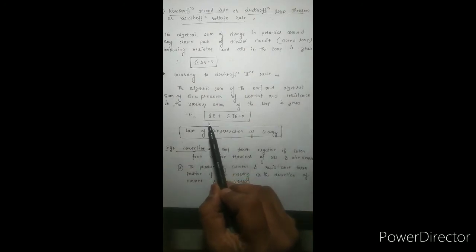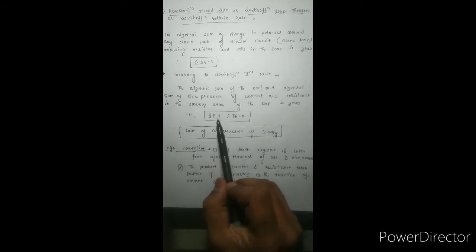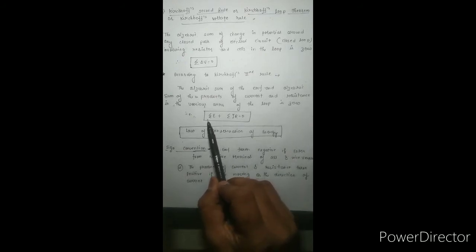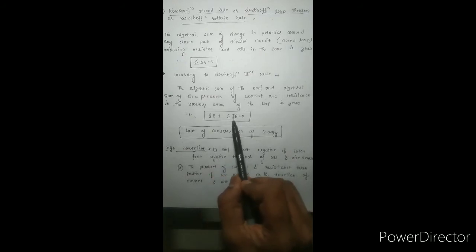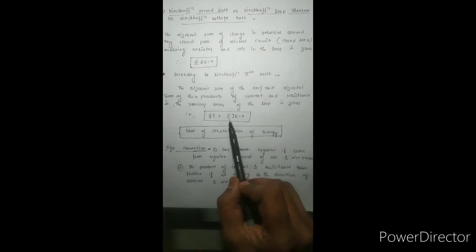This means in a closed loop — whether there is one cell, two, or three — the sum of EMF plus the product of current and resistance will equal zero.